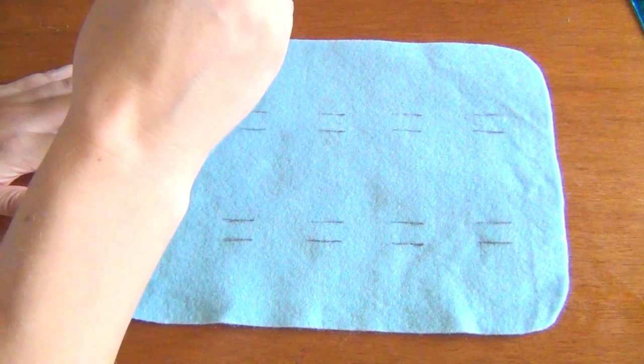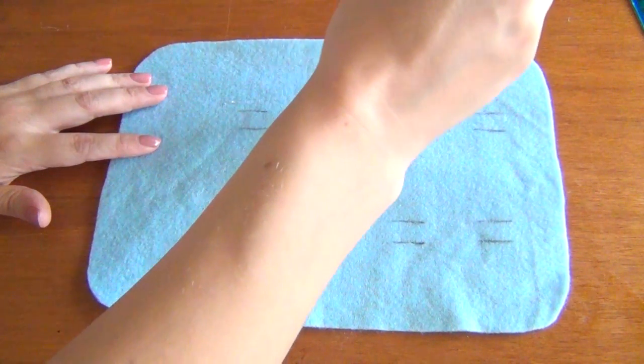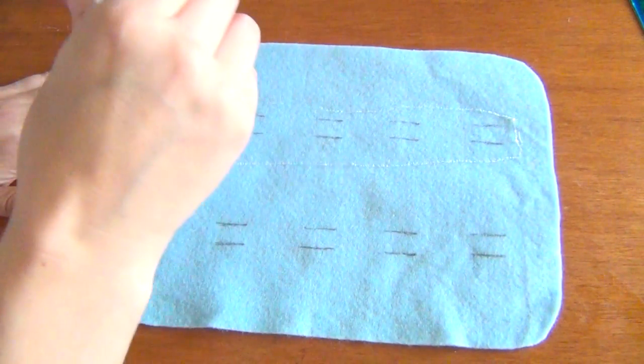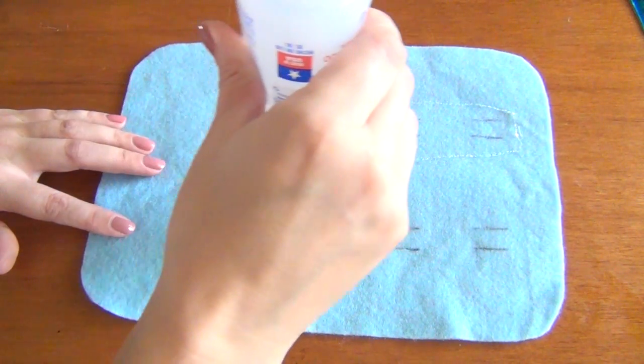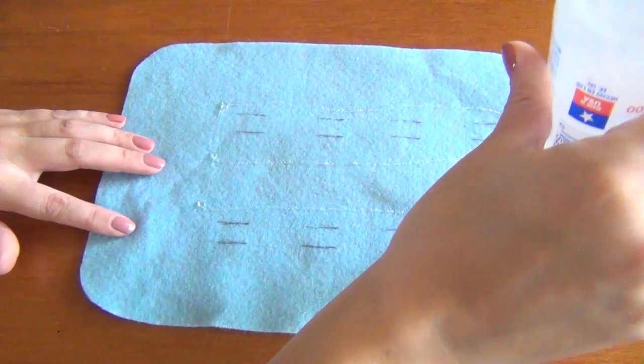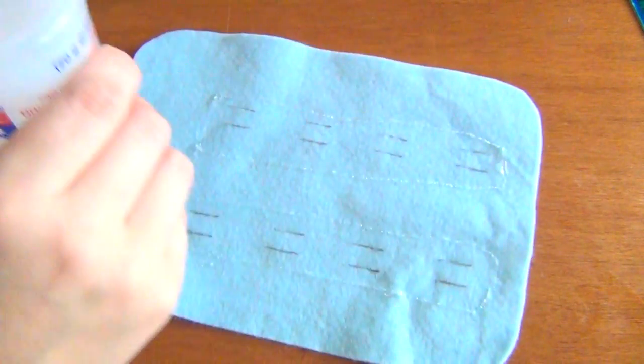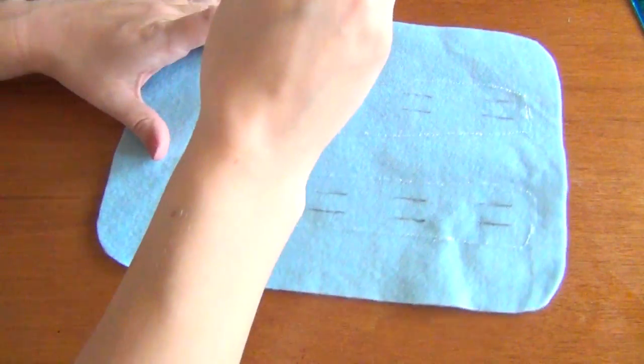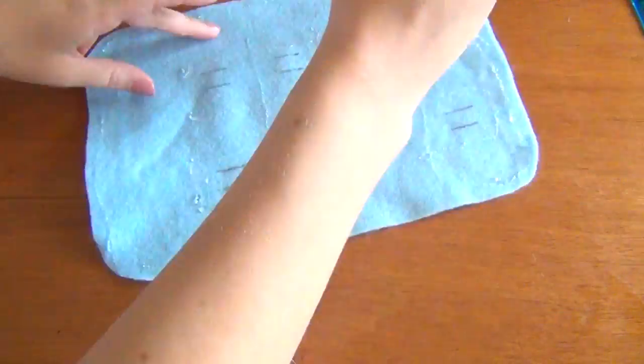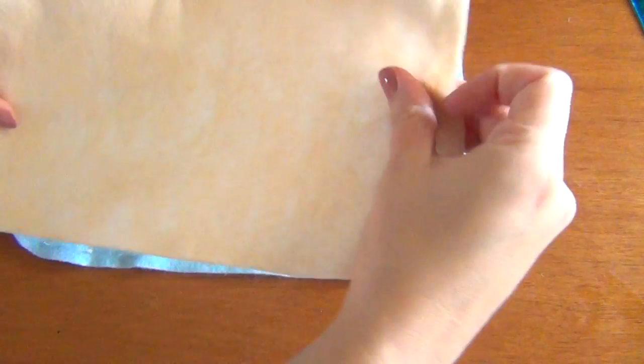Next leave your felt with the side that has the pencil marks facing up and begin adding your Fabri-Tac. You're going to want to add glue pretty much everywhere except for the areas between each set of slits. Otherwise you're basically going to glue shut the area where you're going to have to pull the tab out on the other side to store your pencils.